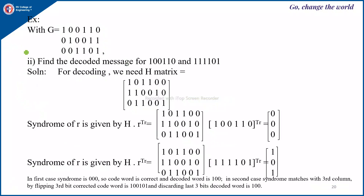Now for decoding, we need the H matrix. The H matrix is found such that its first part is the transpose of the last three columns of G. Here, A is identified, A-transpose is computed, and the identity matrix is appended — giving us the H matrix. Next, find the syndrome of R, given by H into R-transpose. Multiplying H by the transpose of the first received message, we observe that the syndrome is 0,0,0, which means the received message is a correct code word.